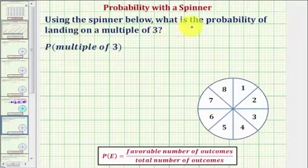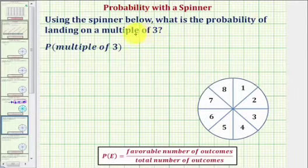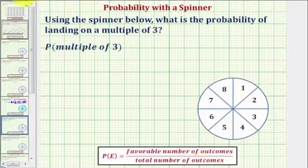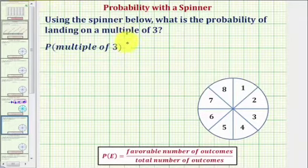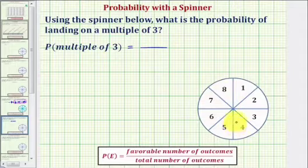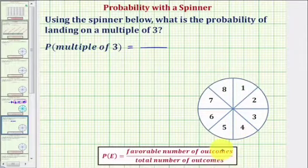Using the spinner below, what is the probability of landing on a multiple of three? To determine the probability of an event, we compare the favorable number of outcomes to the total number of outcomes. Looking at the spinner, notice how there are eight equal-sized sections numbered from one through eight, and therefore there are eight total outcomes.